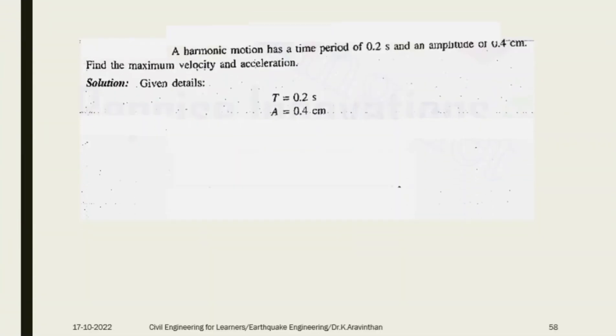A harmonic motion has a time period of 0.2 seconds and an amplitude of 0.4 centimeters. Two parameters are given: time period T and amplitude A. Find the maximum velocity and acceleration. The velocity is x dot equals A times ωn. Amplitude A is 0.4. Natural frequency ωn equals 2π divided by T, which equals 31.42 radians per second.